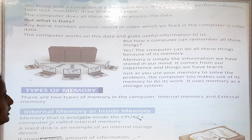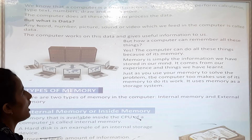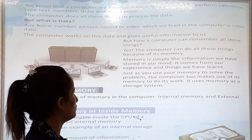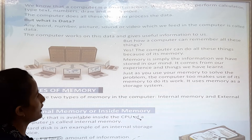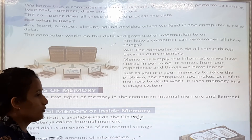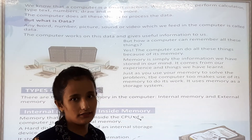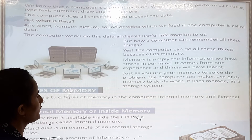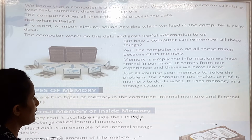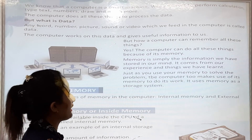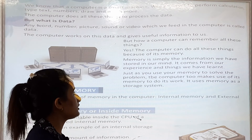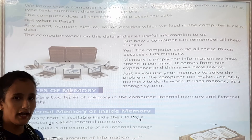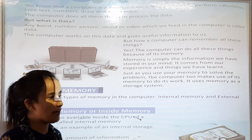So the computer works on data and gives useful information. But how can a computer remember all these things? The computer can do all these things because of its memory. Memory is the information we have stored in our mind from our experiences and things we have learned. Computer memory is also information stored, just like in our mind.